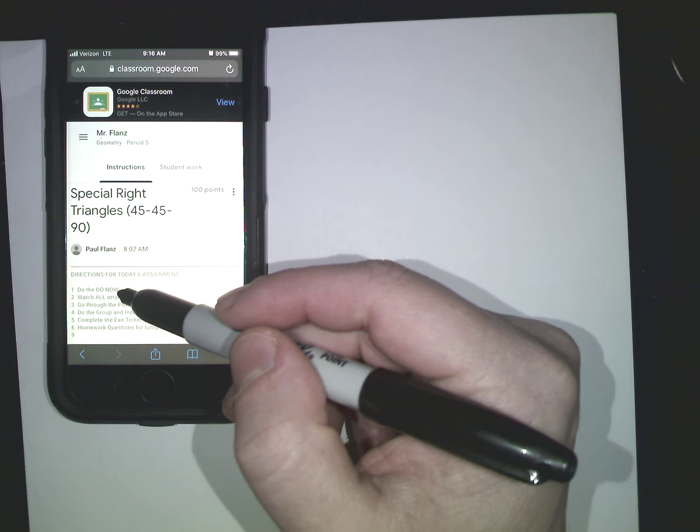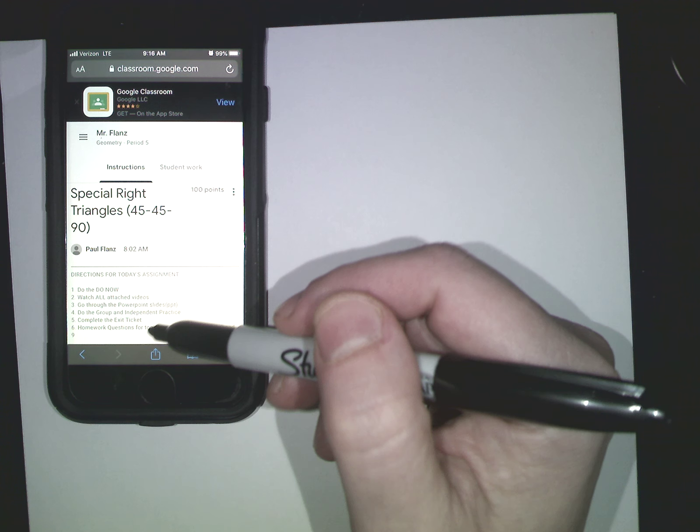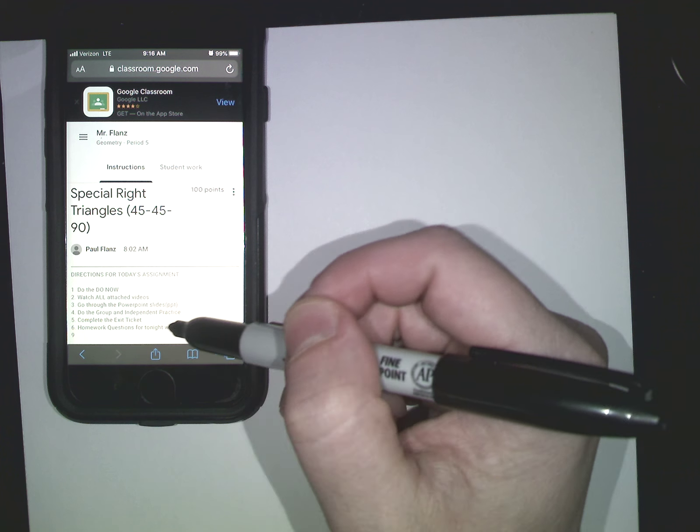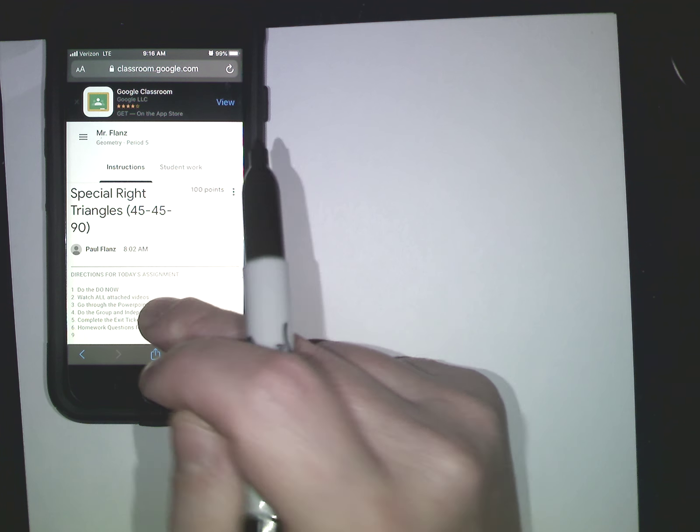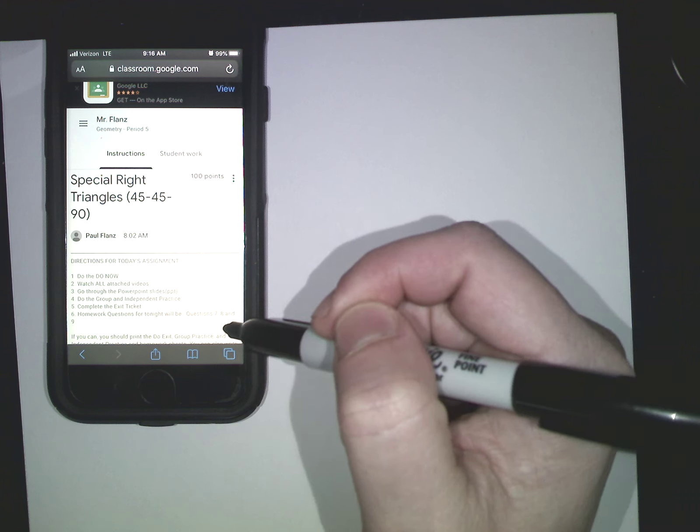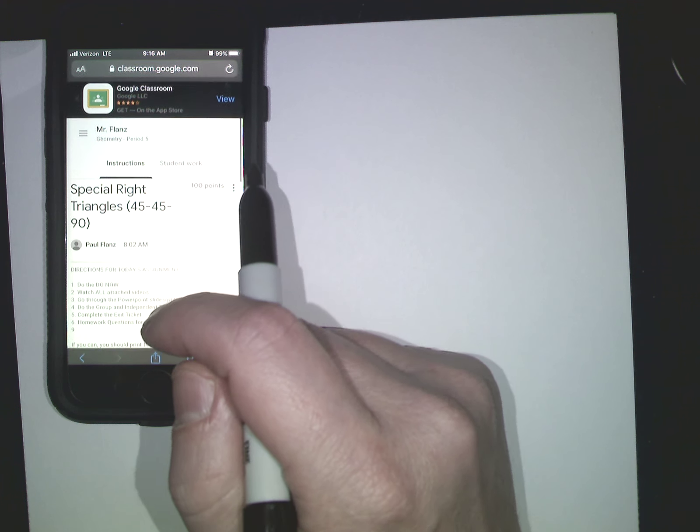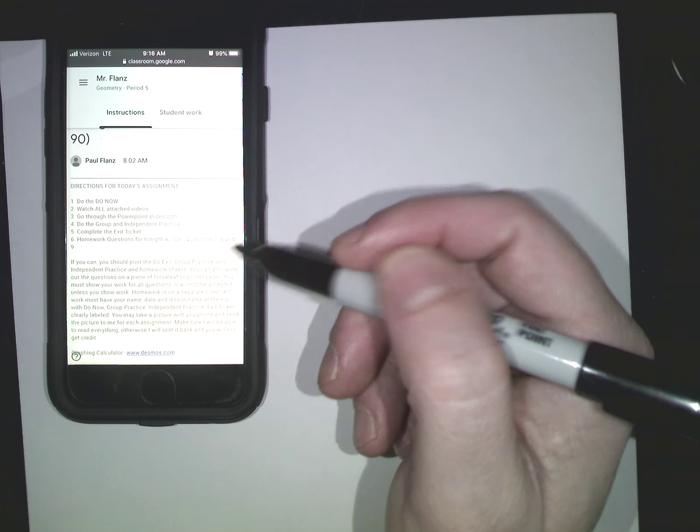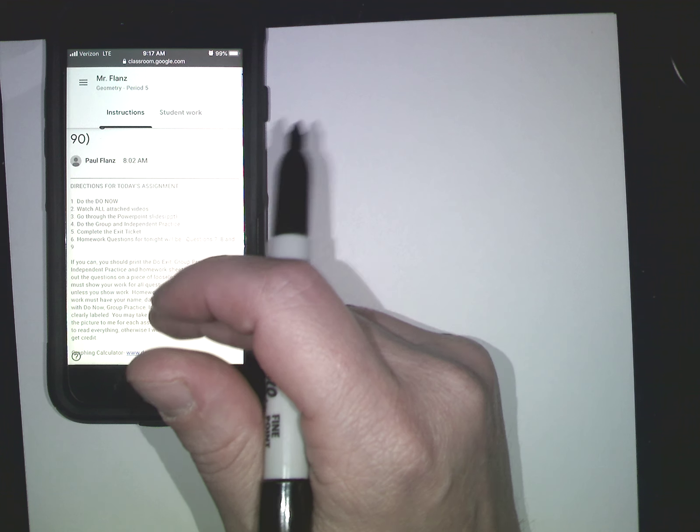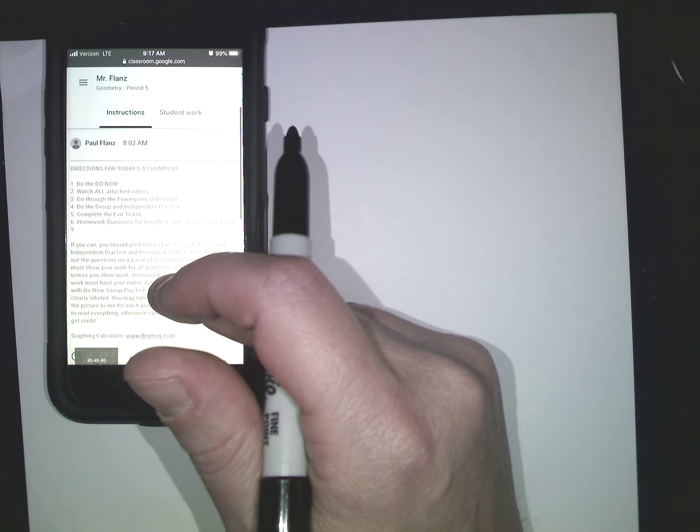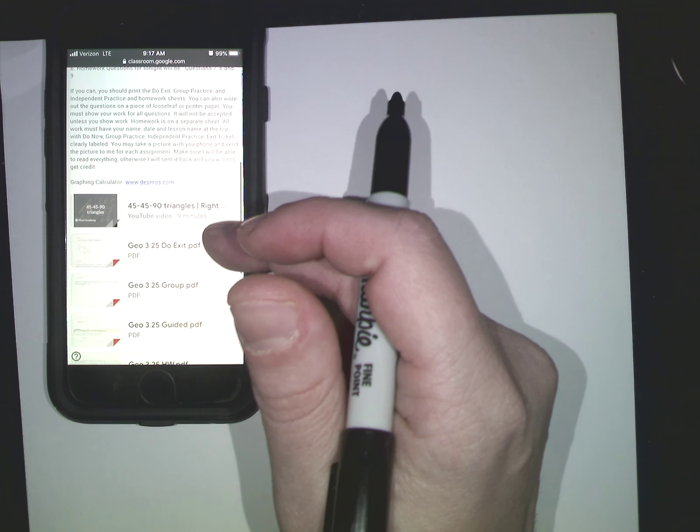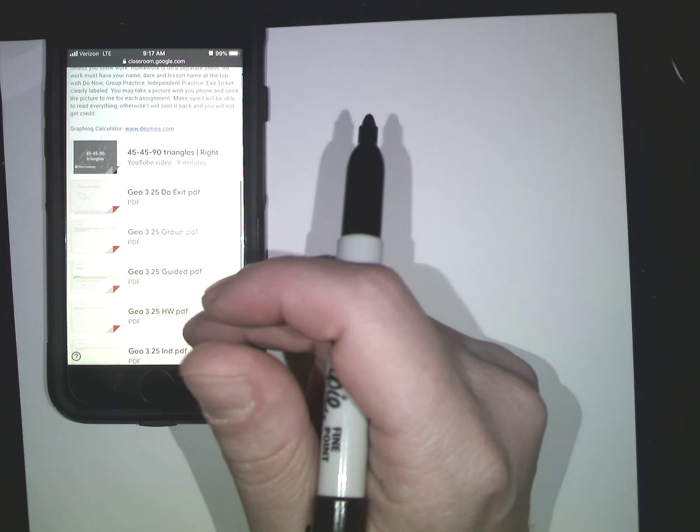It says I have directions. It says do the do now, watch all attached videos, go through the PowerPoint slides, do the group and independent practice, complete the exit ticket. And the homework questions will be 7, 8, and 9. Now everyone, it's not always going to be 7, 8, and 9. Of course, I'll pick different homework questions. Underneath, it's just a little bit more detailed. This is kind of like the general directions for every lesson. Now below this, I have a whole bunch of forms.